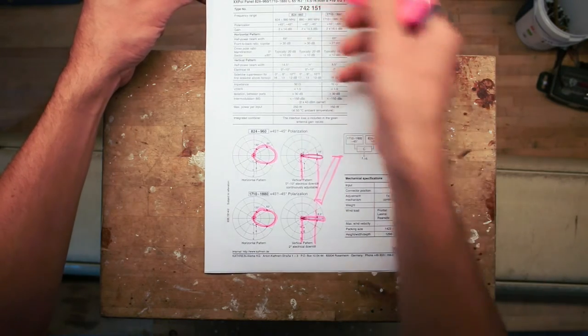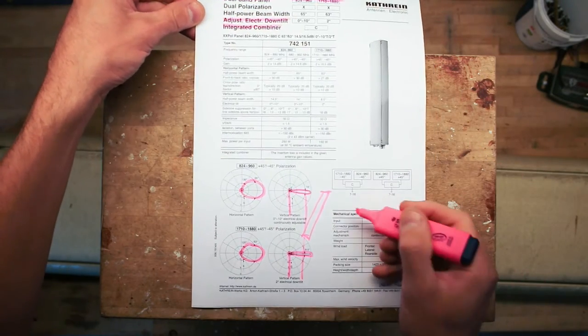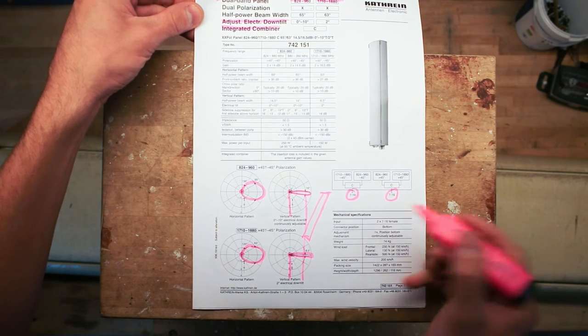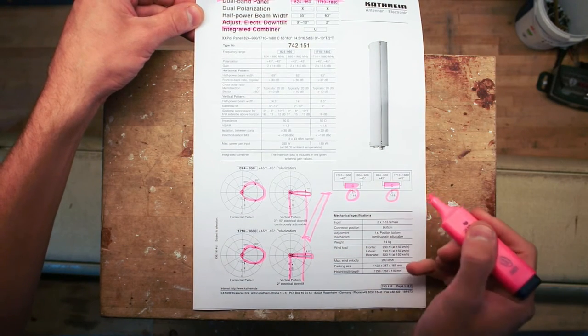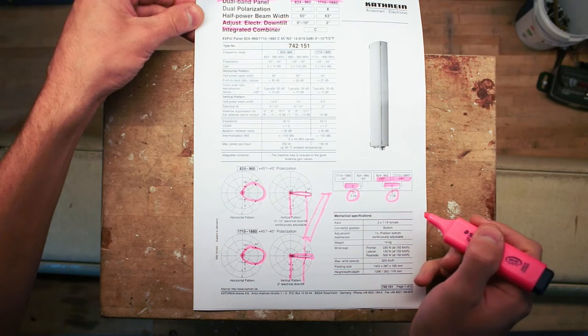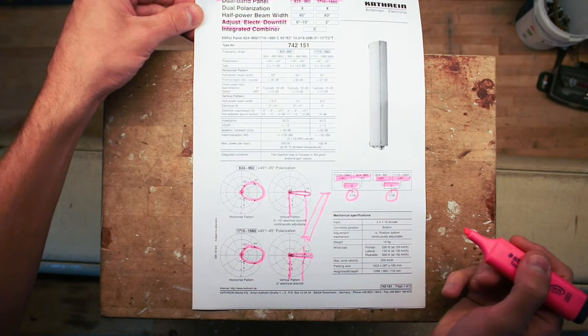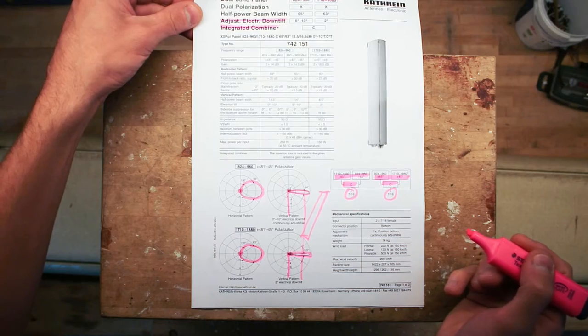This is why you would typically see these mounted like this sitting on top of the antenna, simply because the lobe has to point more downwards towards buildings and where people actually walk around. Now the integrated combiner that we will see, we have the two ports at the bottom of the panel here and then we have the two combiners, one is the plus 45 degrees and the other is minus 45 degrees, so it is 90 degrees out of phase.